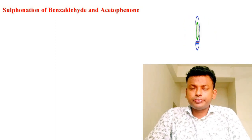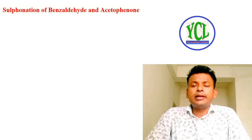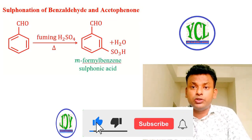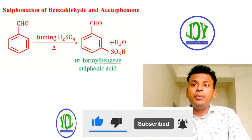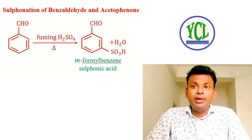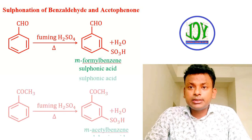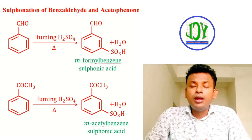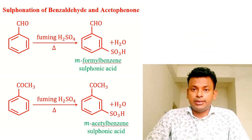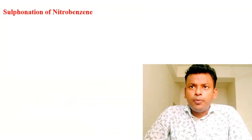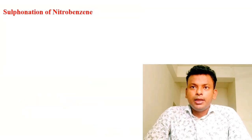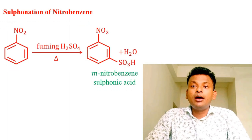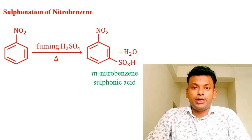Sulfonation of benzaldehyde and acetophenone: benzaldehyde is meta-oriented; it reacts with fuming H₂SO₄ and heat to form meta-formylbenzenesulfonic acid. Acetophenone is also meta-oriented; with fuming H₂SO₄ and heat, meta-acetylbenzenesulfonic acid is formed. Sulfonation of nitrobenzene: nitrobenzene is also meta-oriented; with fuming H₂SO₄ and heat, meta-nitrobenzenesulfonic acid is formed.